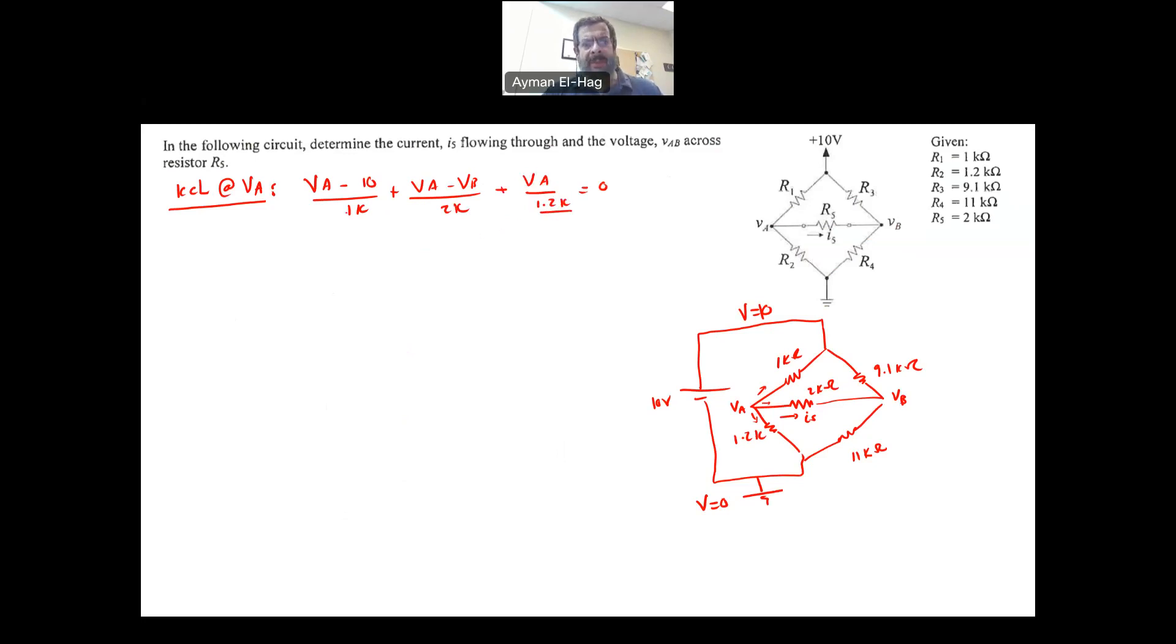We will multiply by the least common denominator. So we multiply everything times 2.4 kΩ. So here we will have 2.4VA - 24 + 1.2VA - 1.2VB + 2VA = 0. So we will have 5.6VA - 1.2VB = 24. And that is my first equation.